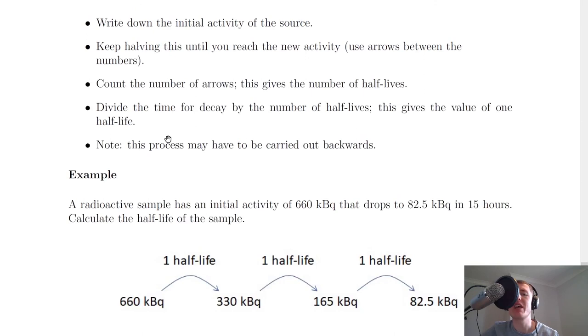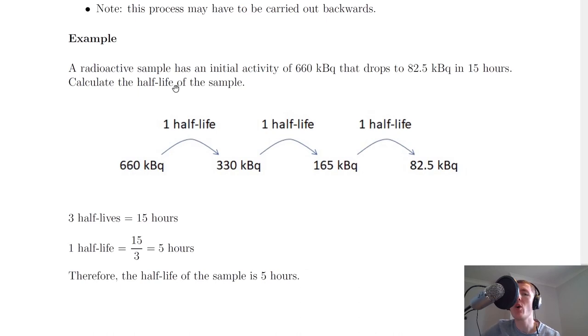Note that this process may have to be carried out backwards. Sometimes a question gives you the half-life value and asks you to work out the final or initial activity. This involves a similar process but in a different order — you might divide first then use the arrows, or work backwards by doubling if finding the initial activity. That's all for this video, I hope you found it useful. If you did, give it a like and subscribe, and I'll see you in the next one. Take care.